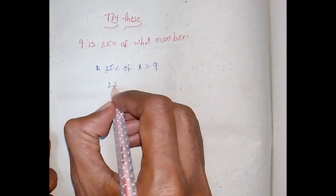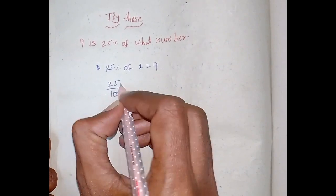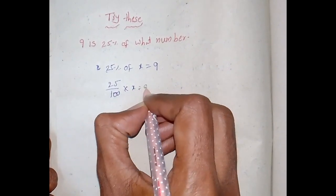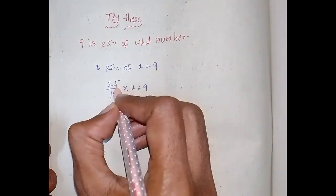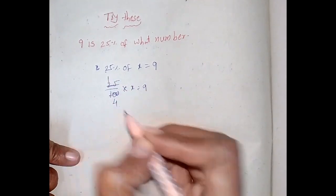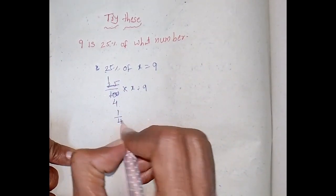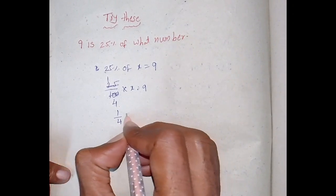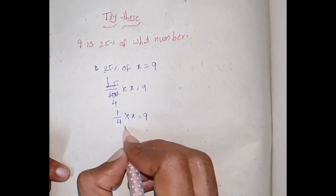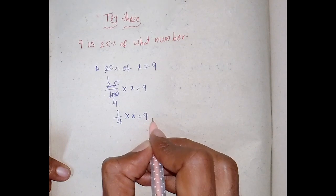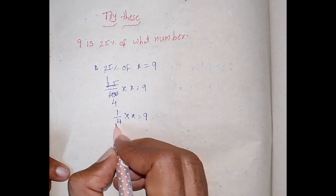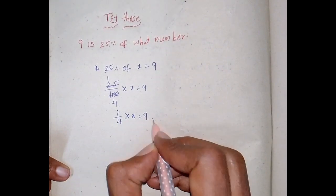25% means 25 by 100, into x, is equal to 9. After cancellation, 25 and 100 cancel — 4 is 100, so 1 by 4 into x is equal to 9. This 1 by 4 is transposing to the right-hand side; 'into' becomes division, then we take the reciprocal.